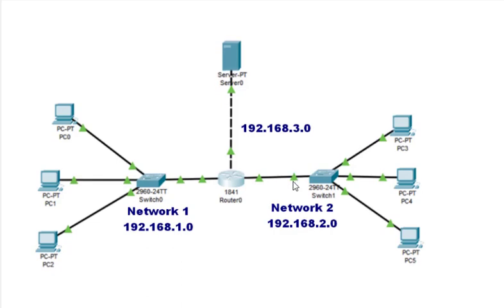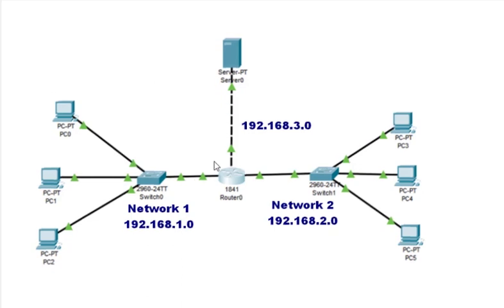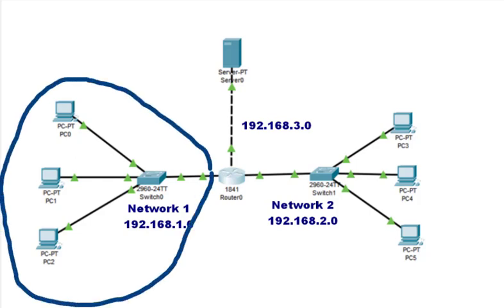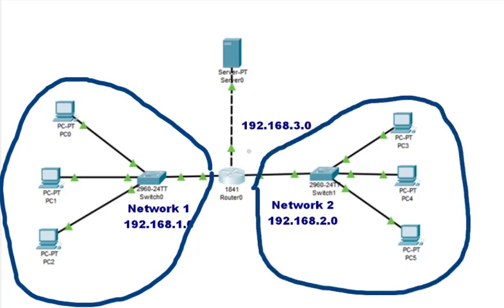First let us understand this particular topology we will be using. On the left side we have three PCs, named network 1, with network address 192.168.1.0, forming one network. On the right side we have network 2 with network address 192.168.2.0, and on network 3 we have just a single server.